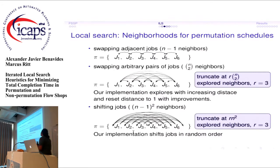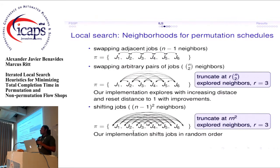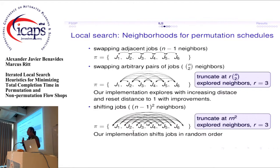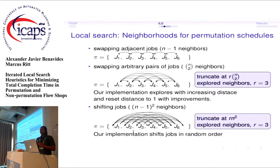One additional detail: we truncate the number of neighborhoods explored to around three times the neighborhood size. In the early stages, the local search can get lost in expensive bad local minima, and in the late stages it won't require exploring a full three-times neighborhood size to find a local minimum.